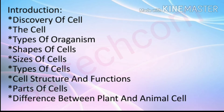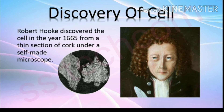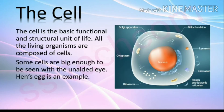We will also cover the difference between plant and animal cell. Discovery of cell: Robert Hooke discovered the cell in the year 1665 from a thin section of cork under a self-made microscope. The cell is the basic functional and structural unit of life.